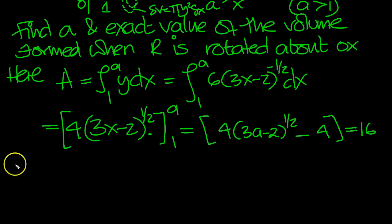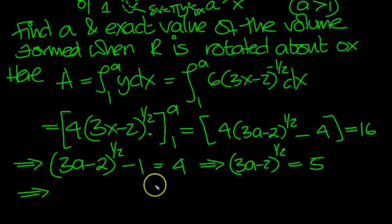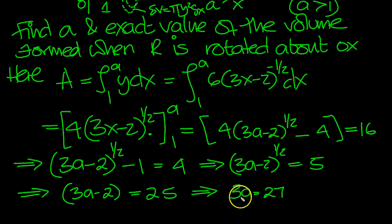Now let's divide by 4 all the way through. And that tells us then that 3a minus 2 to the half minus 1 equals 4. So 3a minus 2 to the half, move the minus 1 over to plus 1, 4 plus 1 is 5. Square both sides now. So the square of the left will just leave 3a minus 2. The square of the right hand side, 5 squared is 25. Now we can move the 2 over to 27. And lastly we need to move the 3 from times down to divide. 27 over 3 is 9. So a equals 9.